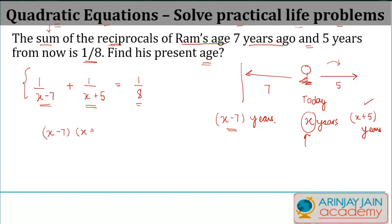So you have X minus 7, X plus 5 as the least common multiple. Here you will have this goes into this X plus 5 times X plus 5, plus this goes into this X minus 7 times X minus 7 is equal to 1 by 8. So what do I get here? I get X plus X, 2X minus 2.